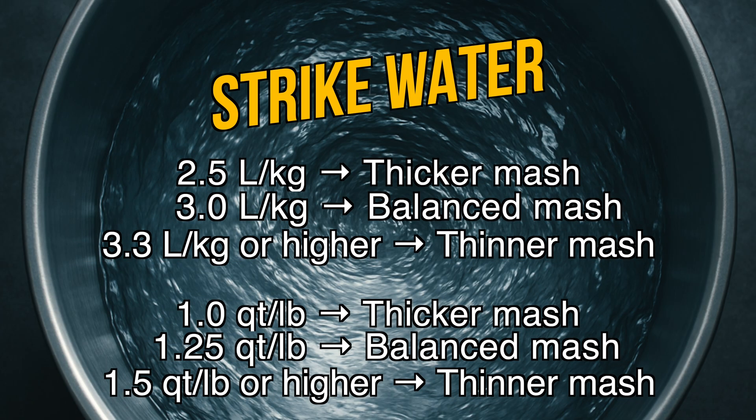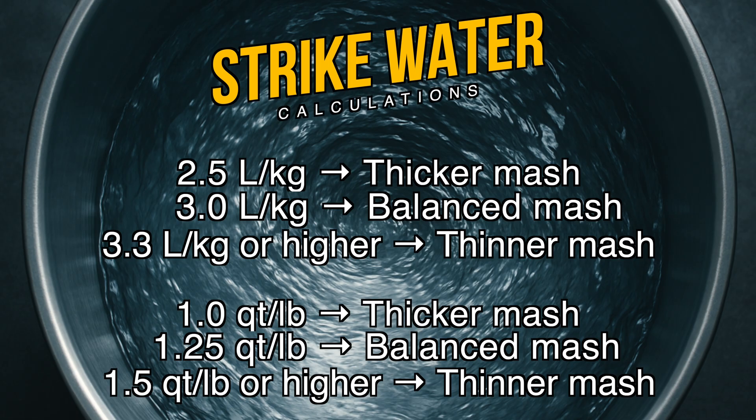On screen you can now see details in both metric and imperial with three different mash types. The thicker mash is mostly suited to a fuller-bodied beer or traditional decoction mashes, but it is not commonly used today as it is less efficient and likely needs a longer mashing time. The balanced mash shown in the middle is the most commonly used, but the thinner mash is popular with many too. Personally I prefer a thinner mash, as it helps with better conversion, more even temperature distribution, and makes the mash easier to stir — helping to avoid dough balls.